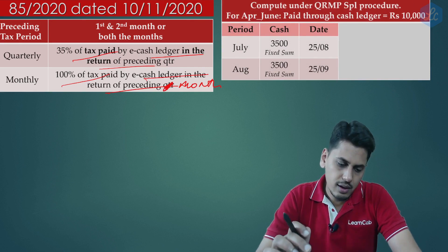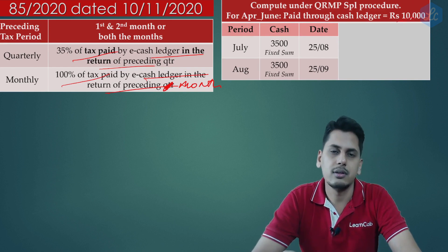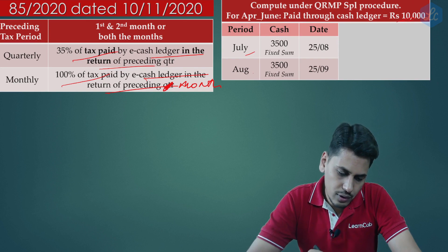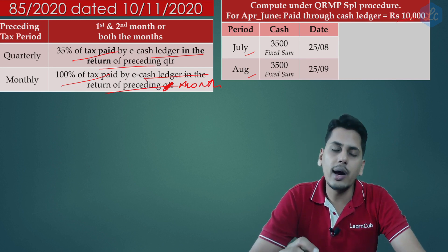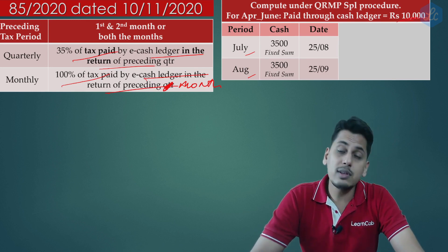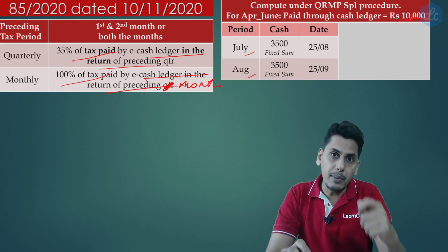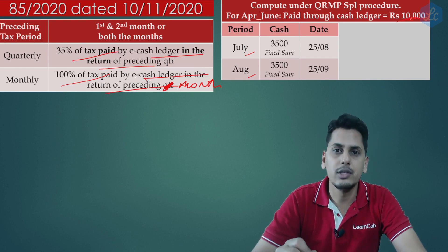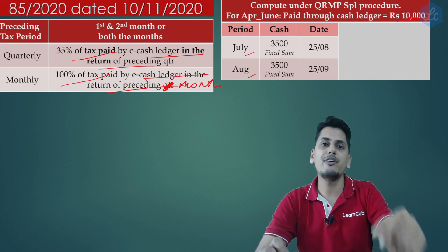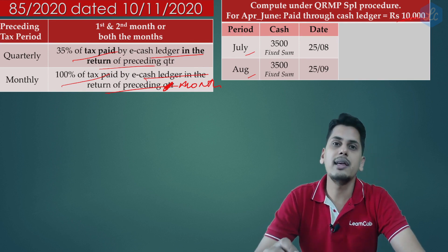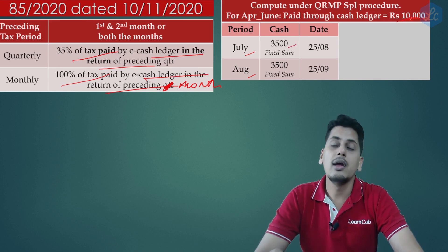Example: April, May, June — amount paid through cash ledger is 10,000, quarter under QRMP. For July under fixed sum, preceding tax period was quarterly, so 10,000 × 35% = 3,500 to pay for July. Due date is 25th of August. For August, the same 3,500 applies. For September — the third month — no deposit of 3,500 is required. Compute the liability for the entire quarter.